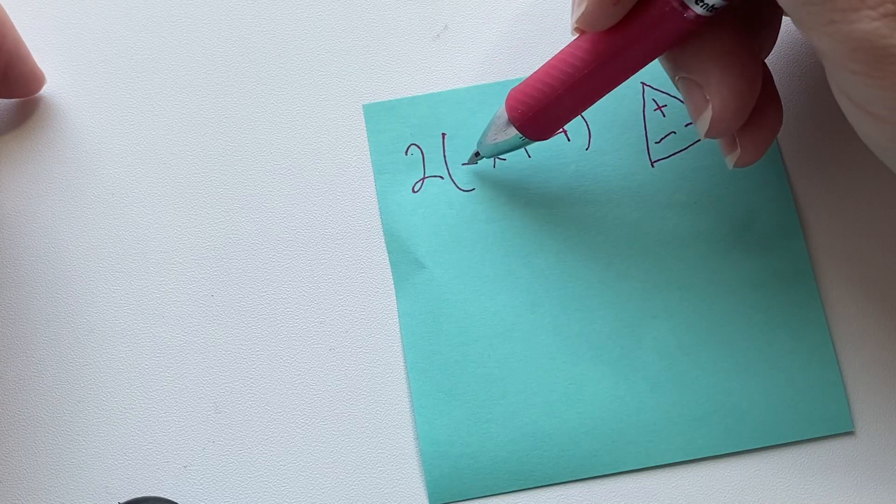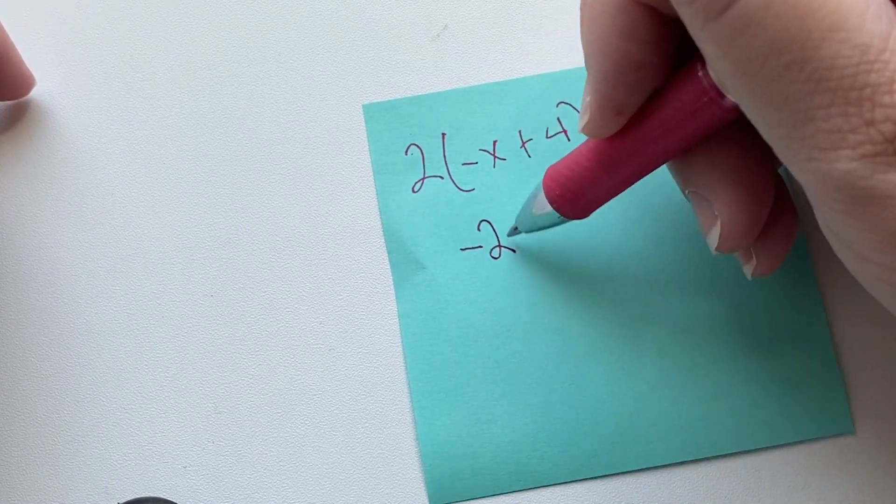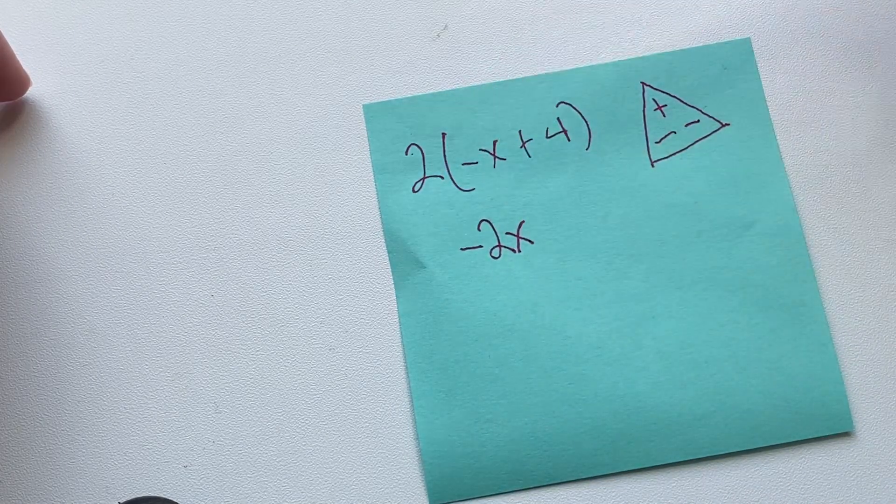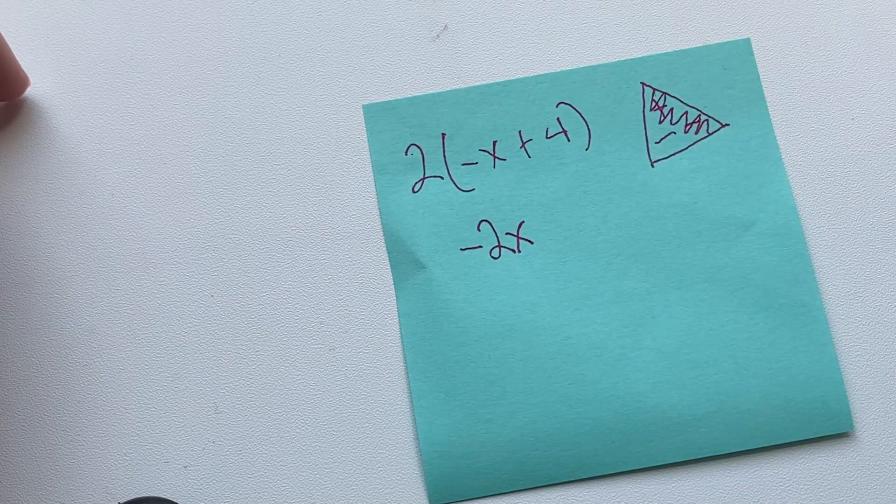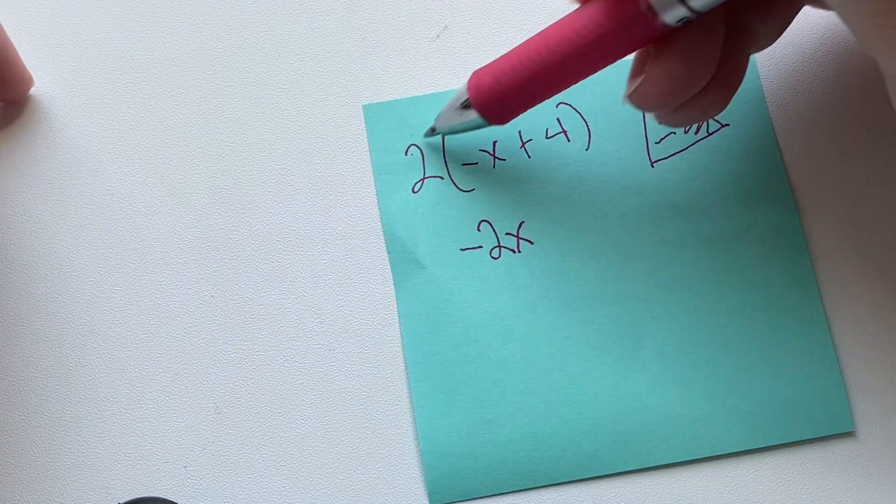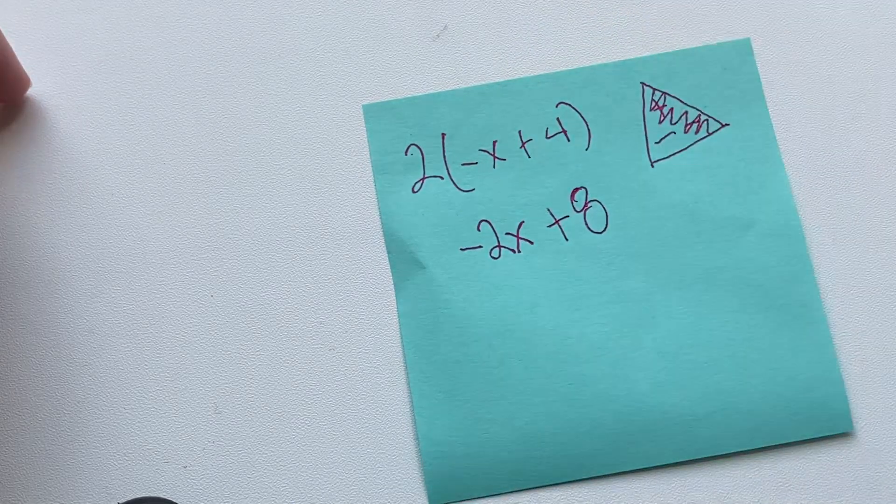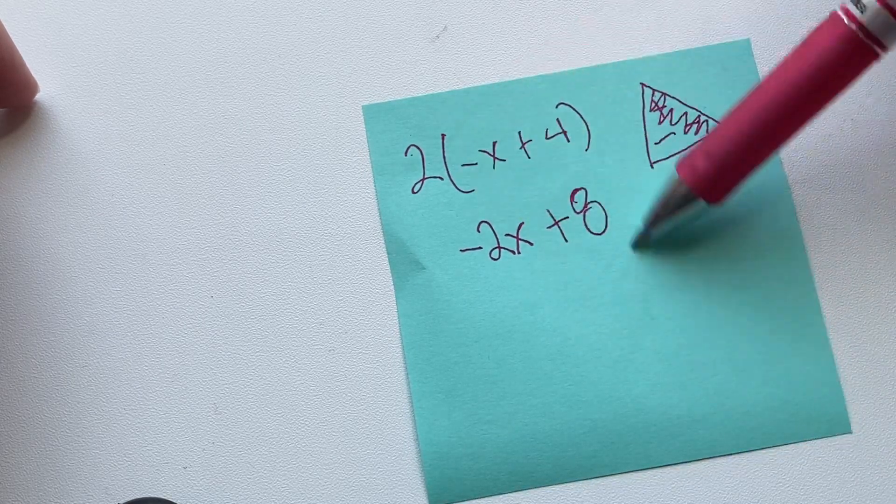so two times negative one would be negative 2x. And if you look here, you'll see this is a positive and a negative. Scribble those out, and you know the result will be negative. And then this, you would just do the same. So two times four is eight. Okay, so that is what we practiced yesterday, is how to deal with negatives on the inside.